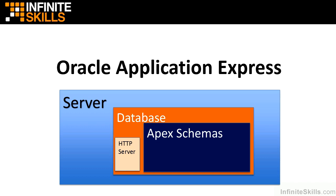This is not the way you would set up Apex in a production environment. This is fine for test, development, and just learning Oracle Application Express. But in a true production environment, you would break the HTTP server outside of the database and run it as an independent process. That HTTP server can run on the same physical server as the Oracle database, or on a different server if you want a true end-tier configuration.